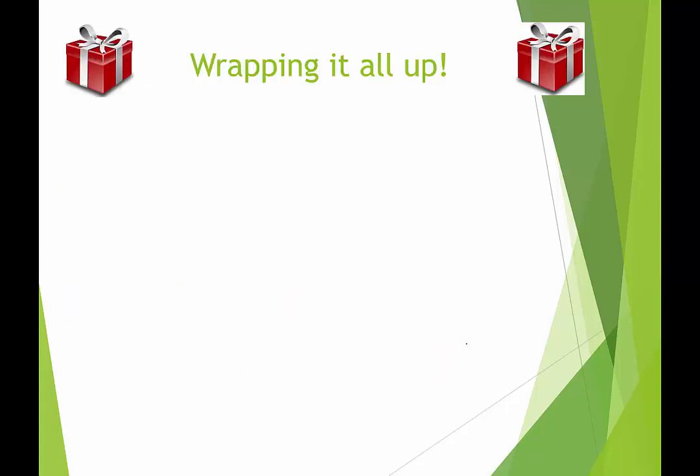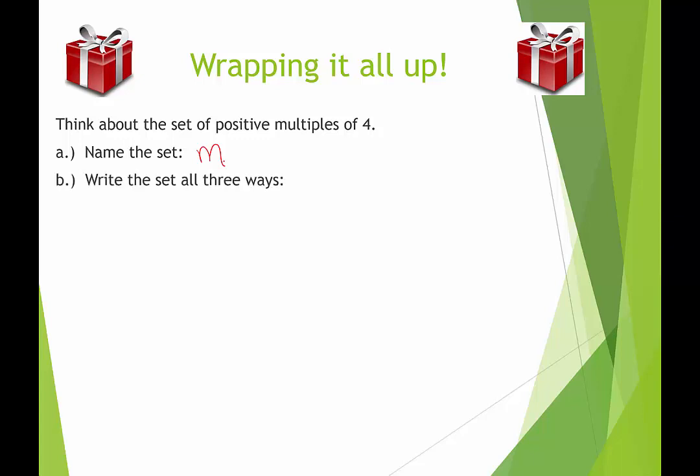We're going to wrap up all of the terminology we've seen in set theory thus far. So we're going to think about the positive multiples of 4. First, let's give this set a name. I'm going to use M for multiple, just a single capital letter. Write the set all three ways. The first way is the listing method. So we would say M = {4, 8, 12, ...}. That's way 1.